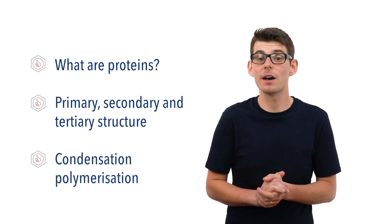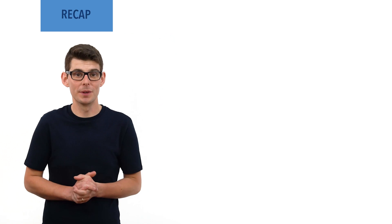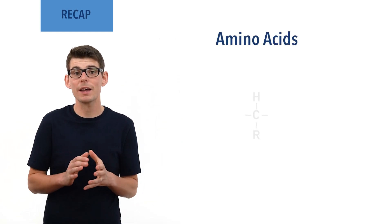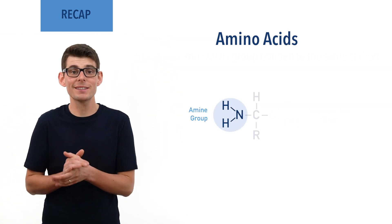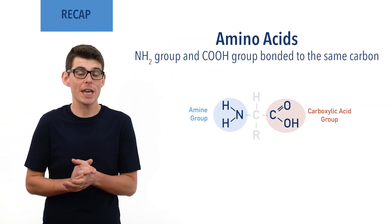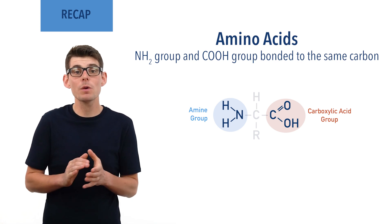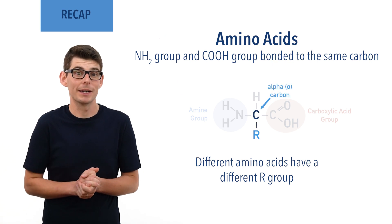Amino acids have been covered in a separate video — check the links in the description below. Before we talk in detail about proteins there are a few essential ideas you need to be comfortable with. Amino acids are a group of compounds that all have the same general structure, with an amine and carboxylic acid group at each end of the chain. There are naturally occurring amino acids, each with a different R group bonded to the central alpha carbon atom.